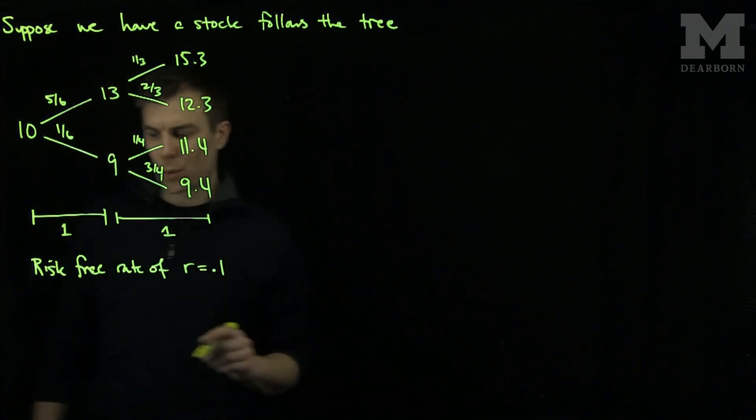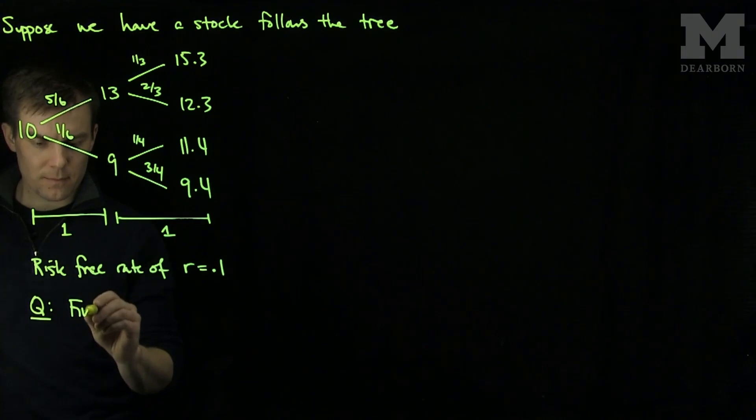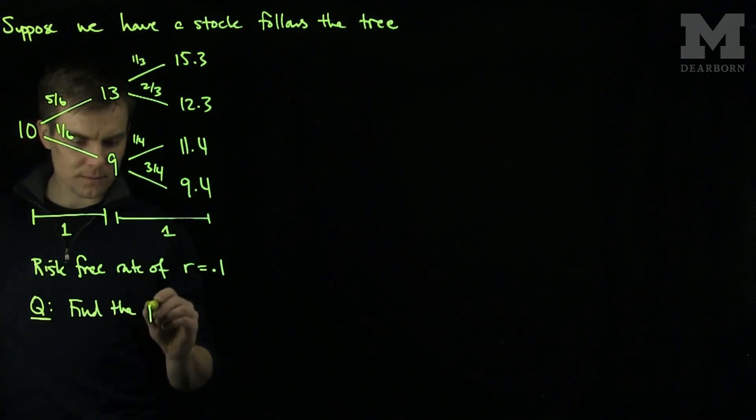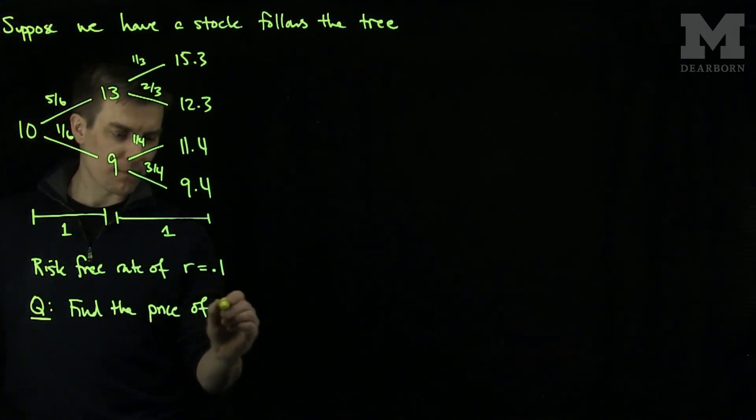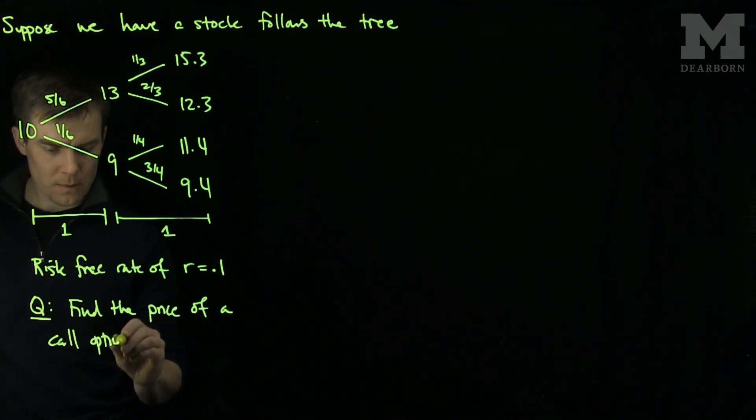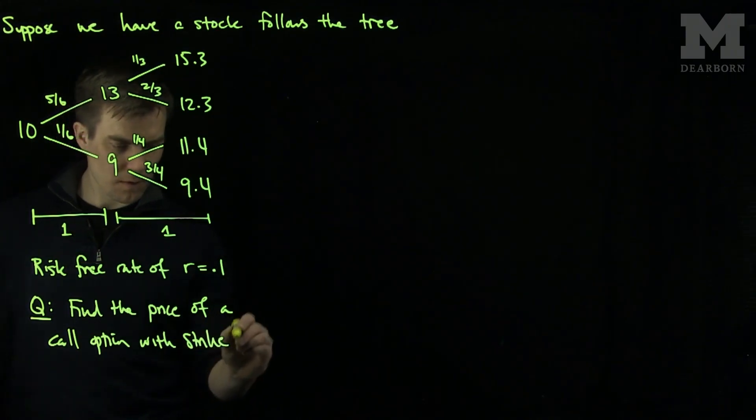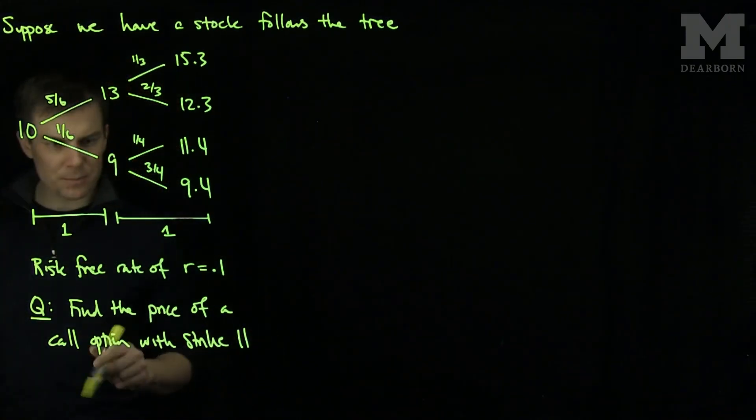So what we like to do is we want to find, so the question we will address is to find the price of a call option with strike 11 and expiration 2.